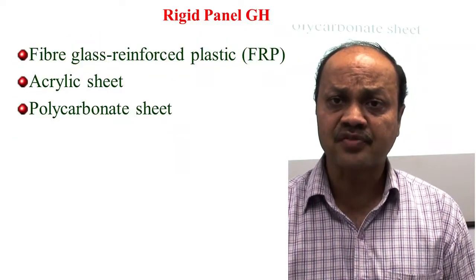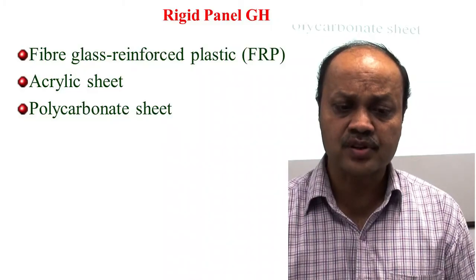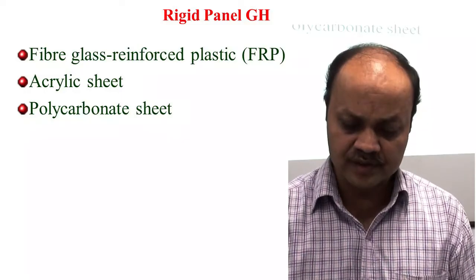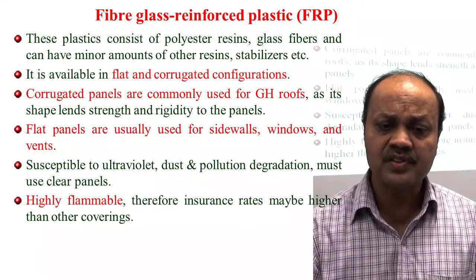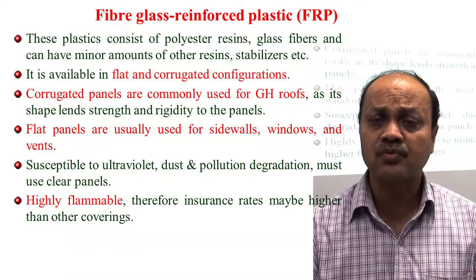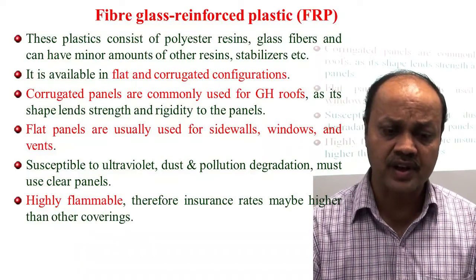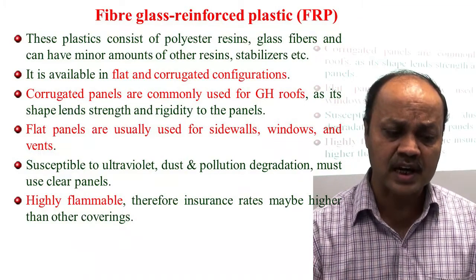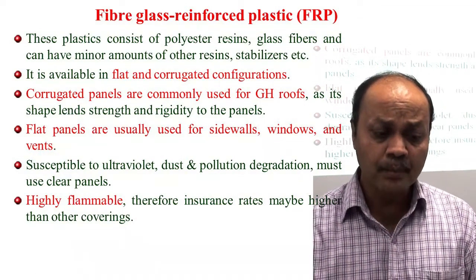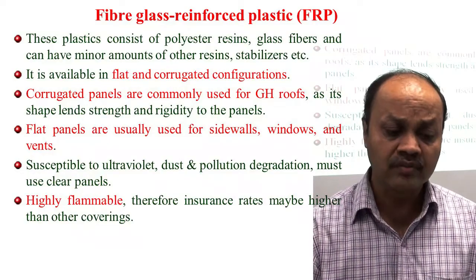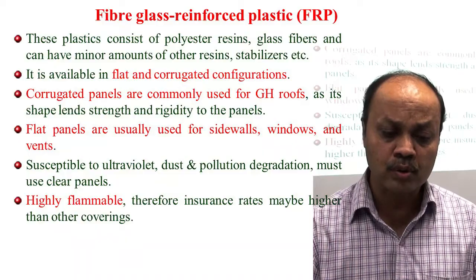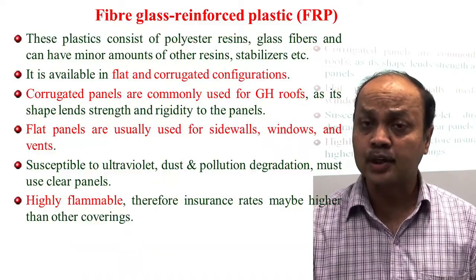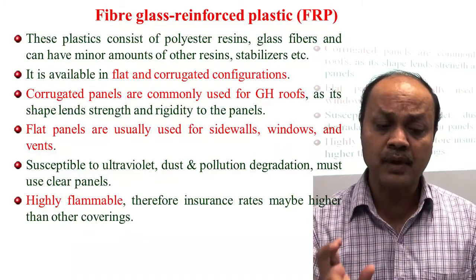Rigid panels are broadly classified into three types: fiber reinforced plastic (FRP), acrylic sheet, and polycarbonate sheet. FRP sheets are available in flat or corrugated configurations — corrugated panels are used for roof purposes and flat panels for side walls. However, FRP is highly flammable, which increases insurance costs significantly compared to non-flammable materials.